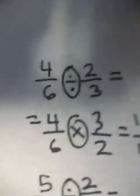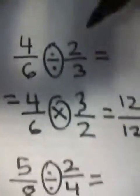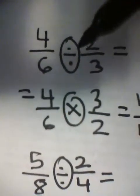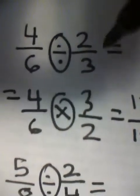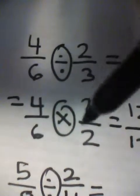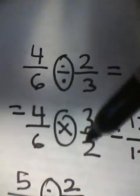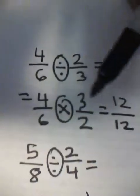Here we have 4 over 6 divided by 2 over 3. In division we're not actually dividing — we're always multiplying. So you keep 4 over 6, then change the division sign to a multiplication sign, and when you do that you switch the second fraction around — so 2 over 3 becomes 3 over 2. Then multiply: 4 times 3 equals 12, 6 times 2 equals 12, which equals 1. You always switch the second fraction.